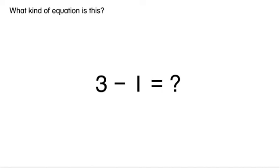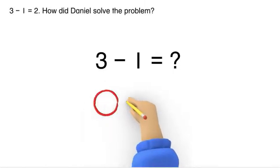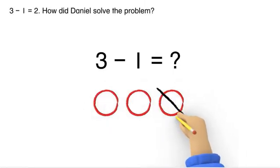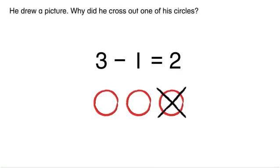It is a subtraction equation. How do you know? There is a minus sign. Three minus one equals two. How did Daniel solve the problem? He drew a picture.